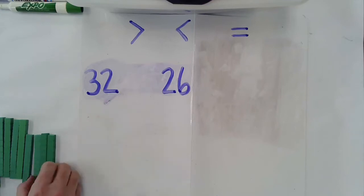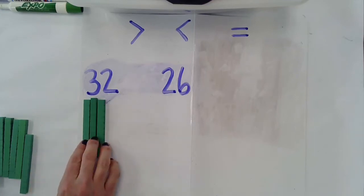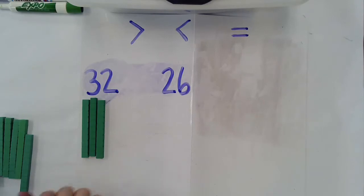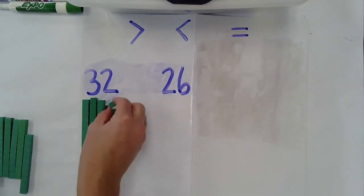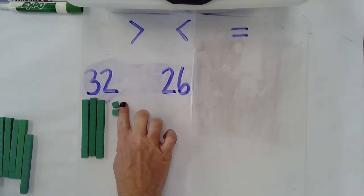So I'm going to make 32 with place value blocks. I see there is a 3 in the tens place, so I have 3 tens, and I see there is a 2 in the ones place, so I have 2 ones.